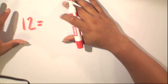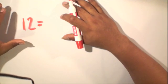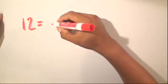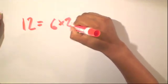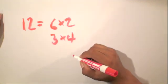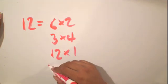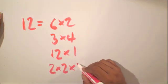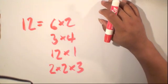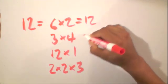When we're looking for the factors of 12, we're also asking the question: what are the different ways of writing the number 12? One way is to have 6 times 2. But we also have 3 times 4, 12 times 1, and we also have 2 times 2 times 3. So there are many different ways of writing the number 12, and they all equal the same number.